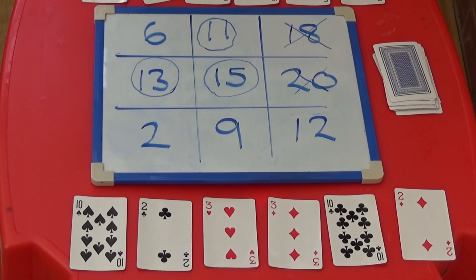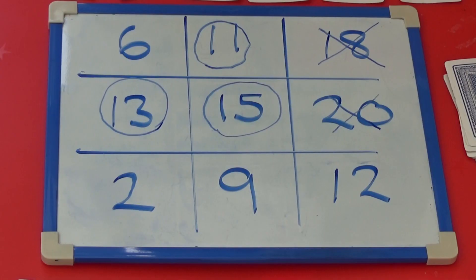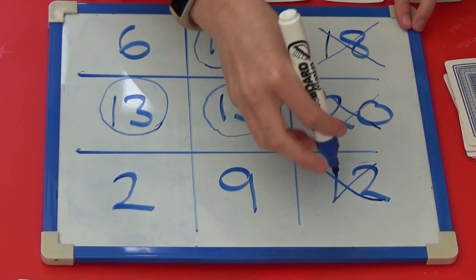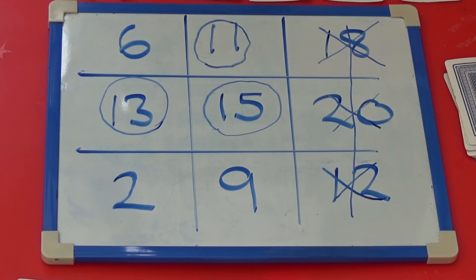The other player can add 10 and 2 to make 12 to win the game. So they would put a cross on 12. They are now the winner.